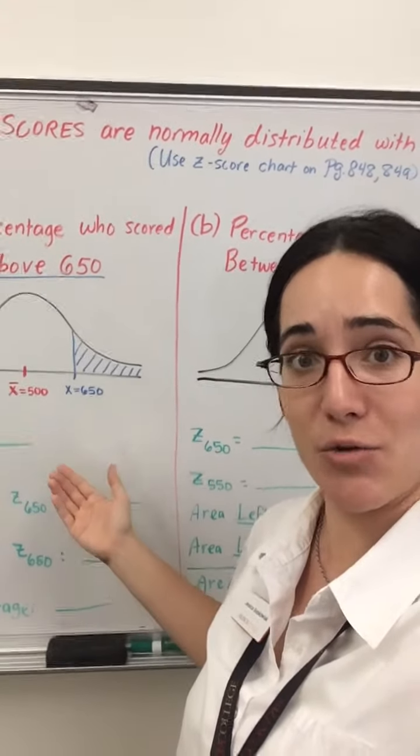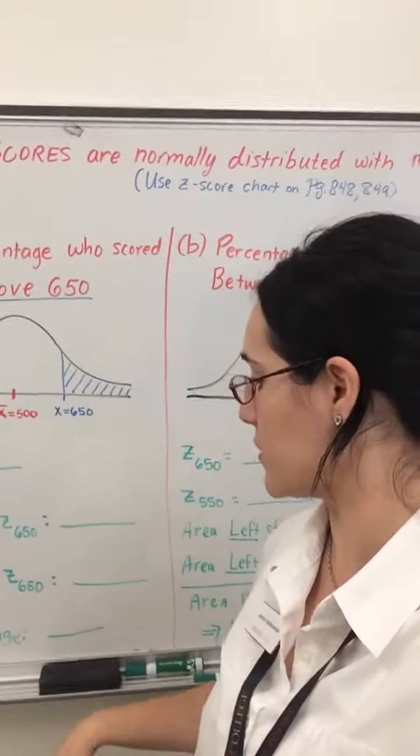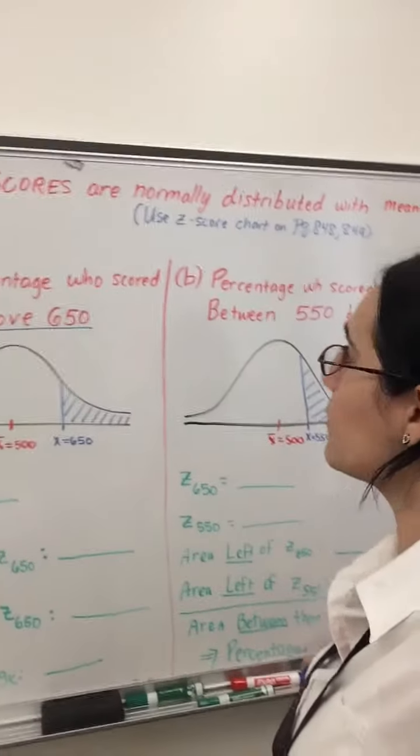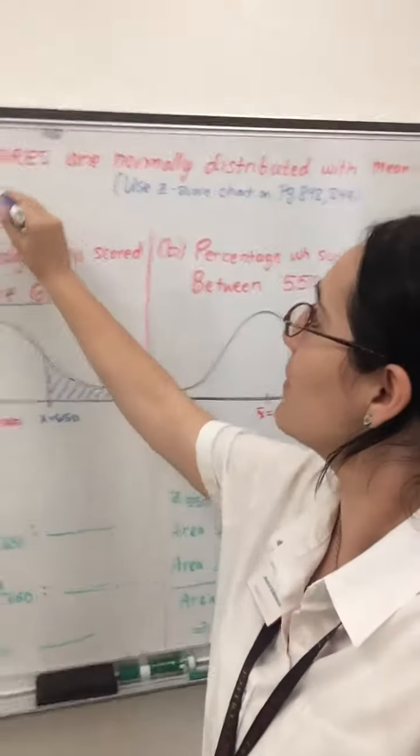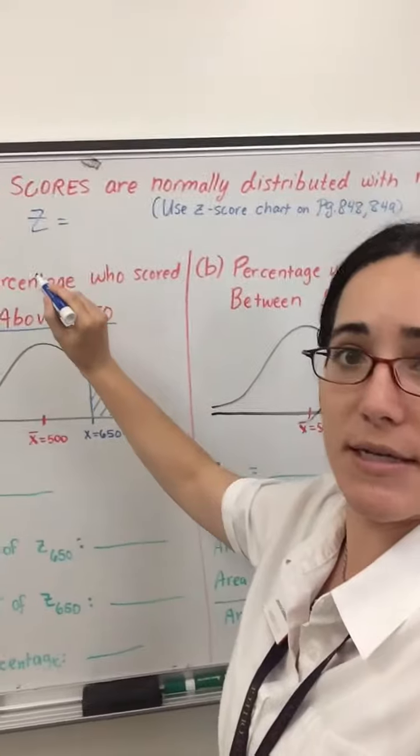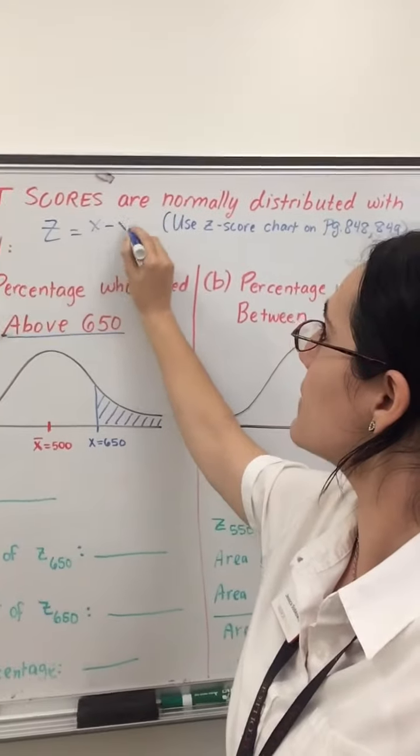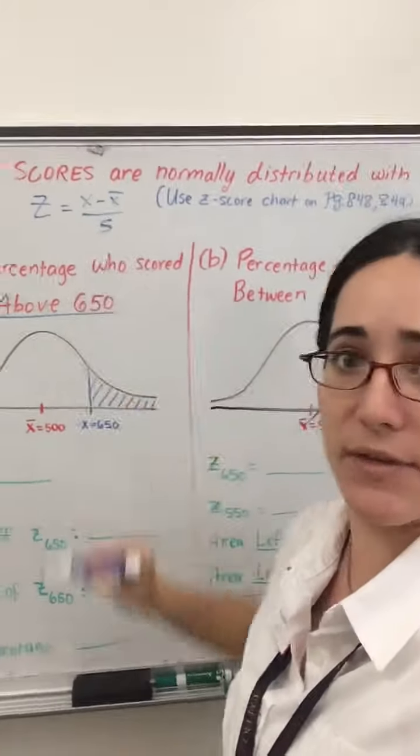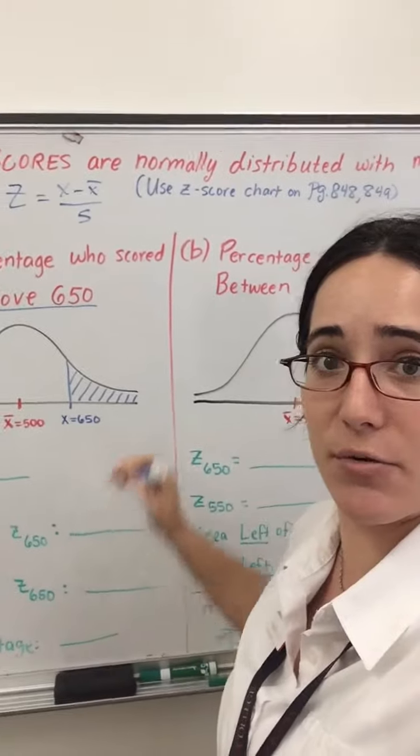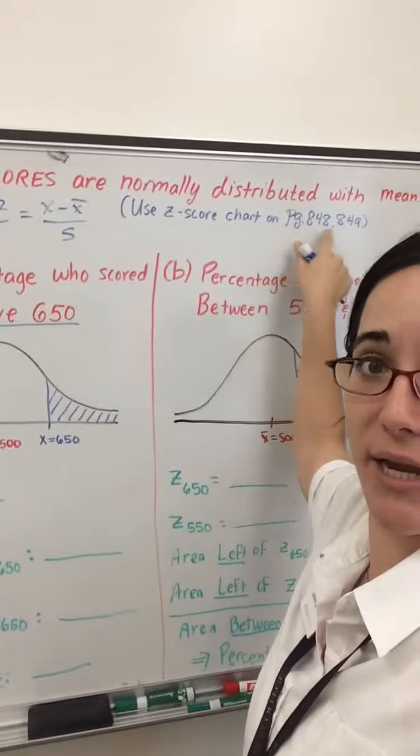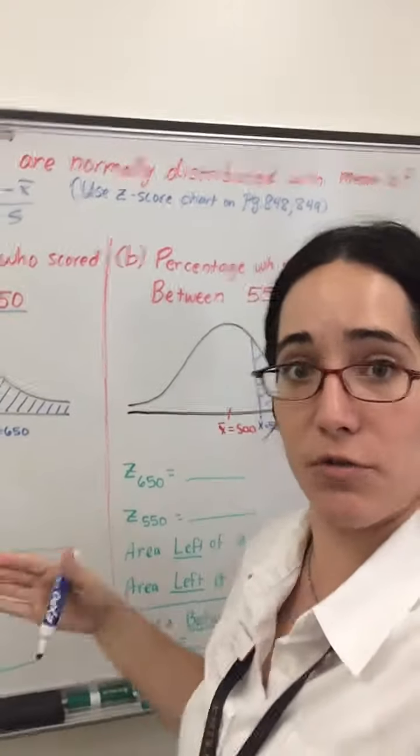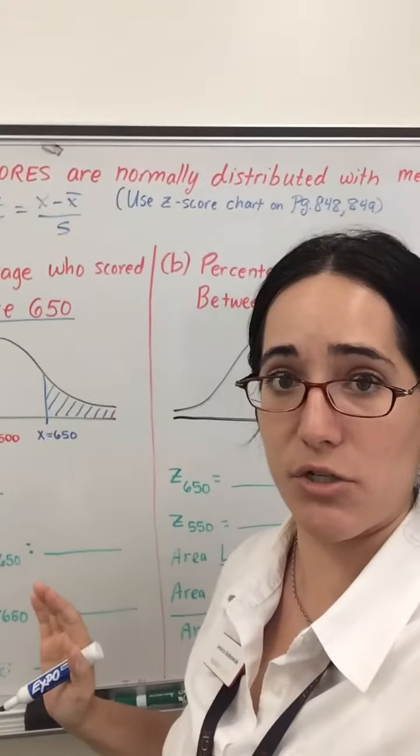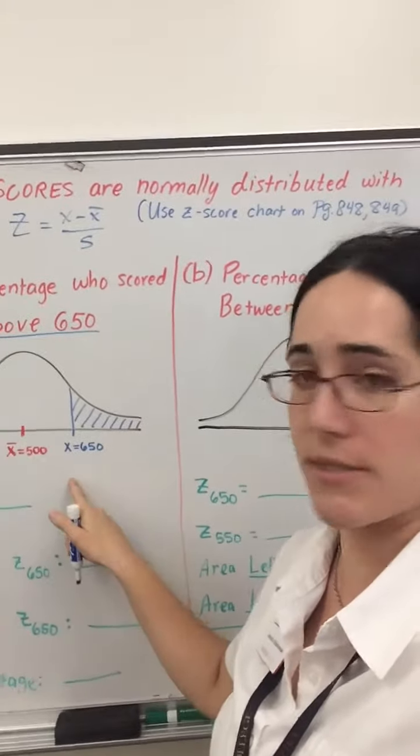So to begin, we need to use our z-score conversion. Remember our z-score formula, and then we will go to our z-score chart. z equals x minus the mean over the standard deviation. So we'll use that together with our chart on page 848 and 849 of our book to figure out the areas to the left of every z-score.